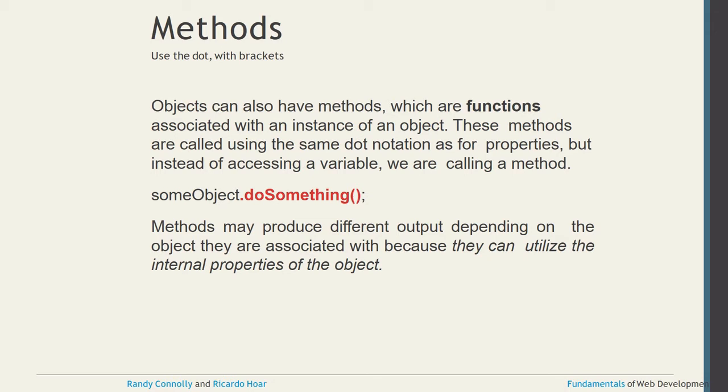Objects can also have methods, which are functions associated with that instance of an object. Methods are called using the same dot notation as properties, but instead of accessing a variable we are calling a function. For example: 'someObject.doSomething()'. Methods may produce different output depending on the object they are associated with, because they can utilize the internal properties of the object.